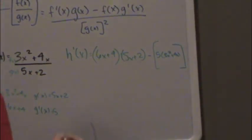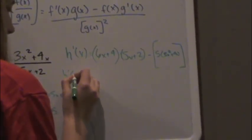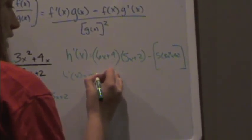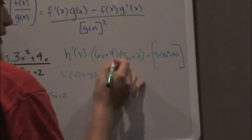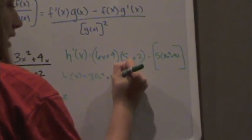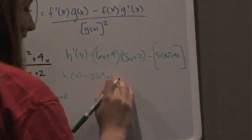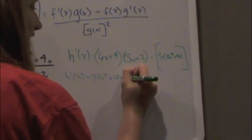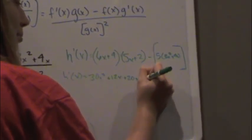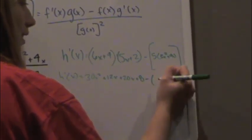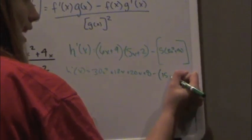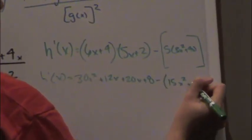Alright, so let's distribute. Foil here so that would become 30x squared, first outer, so plus 12x plus 20x plus 8, and then we're going to subtract. If we're distributing the 5 here we get 15x squared plus 20x.